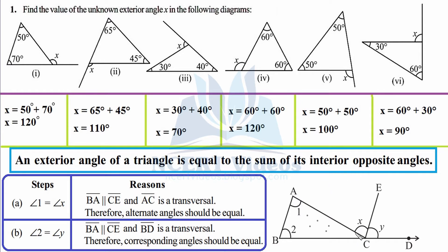One more obvious thing is that the interior angle at vertex C and the exterior angle make a linear pair — this will be true for any exterior angle formed. Therefore they are supplementary, meaning their sum makes 180 degrees. So the exterior angle plus the interior angle at the same vertex equals 180 degrees.